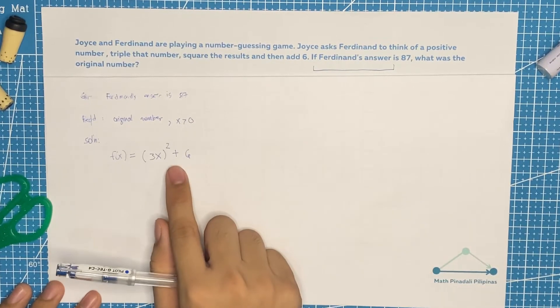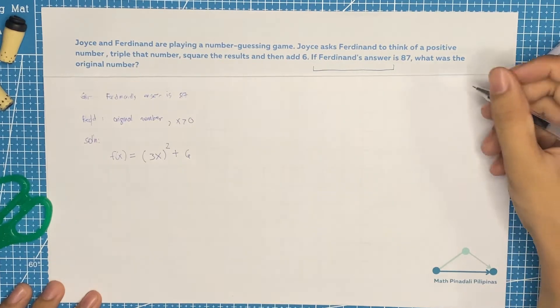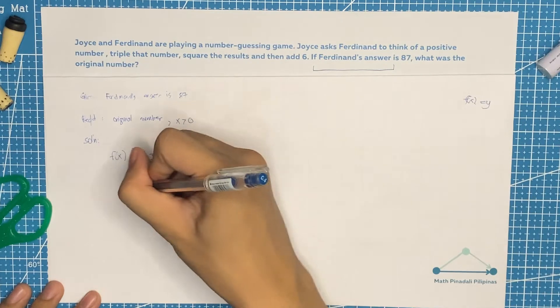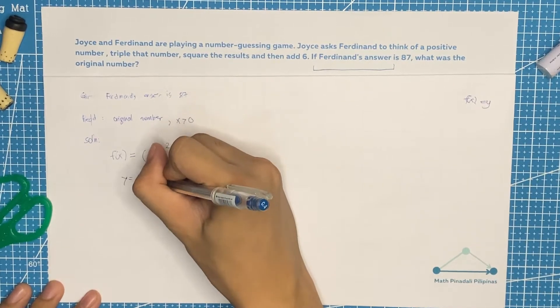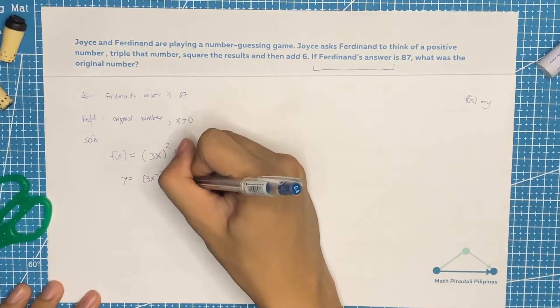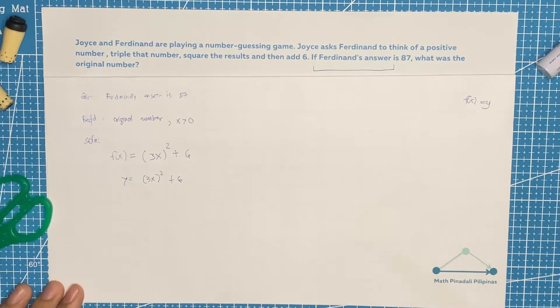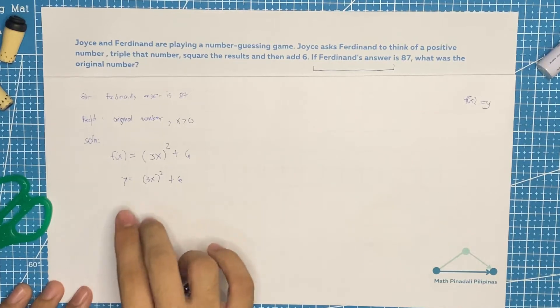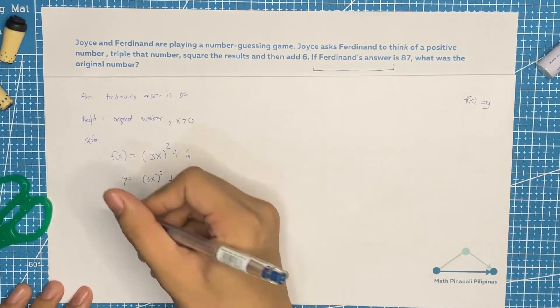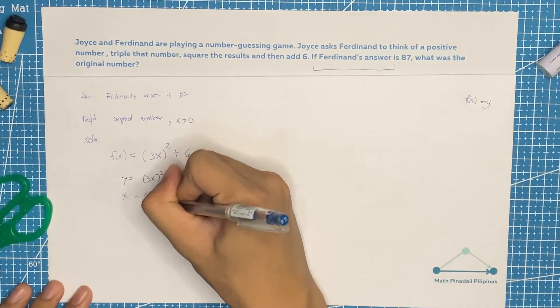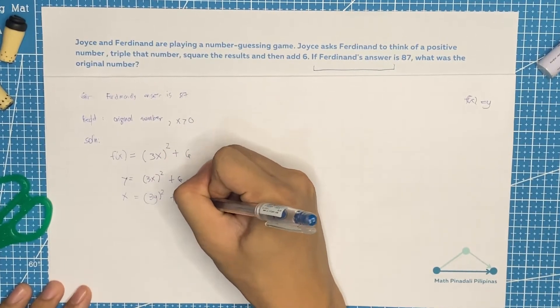Now, let's try to get the inverse function of this one. We know that if f of x, we represent it as y. So that would be y equals 3x squared plus 6. Now, what we're going to do when we are looking for the inverse function, we'll interchange x and y. So y becomes x equals 3y squared plus 6.